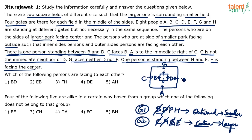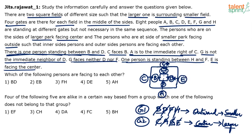The only person left is E, so E fills the last position. One person is standing between H and F, so H and F are in the inner square. G faces neither D nor F, so F cannot come in the position facing G — F has to take the other available inner position. With F placed, H takes the remaining inner position. So in the inner field we have B, F, D, H and in the outer field we have C, A, E, G. The last clue — E is facing center — was already used while deciding the groups. The entire arrangement is done.